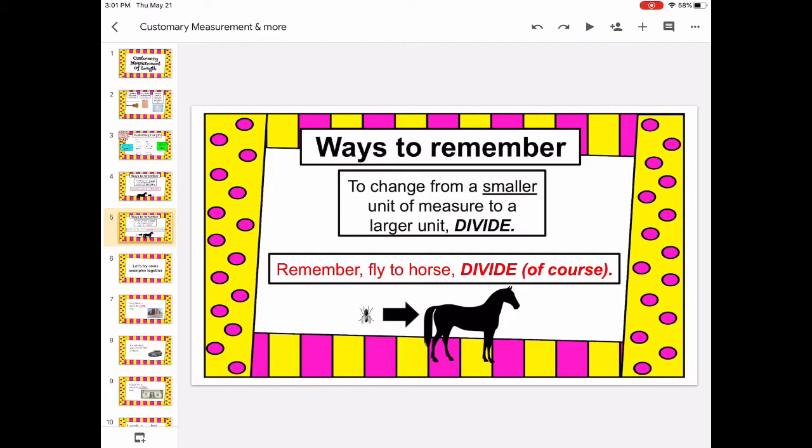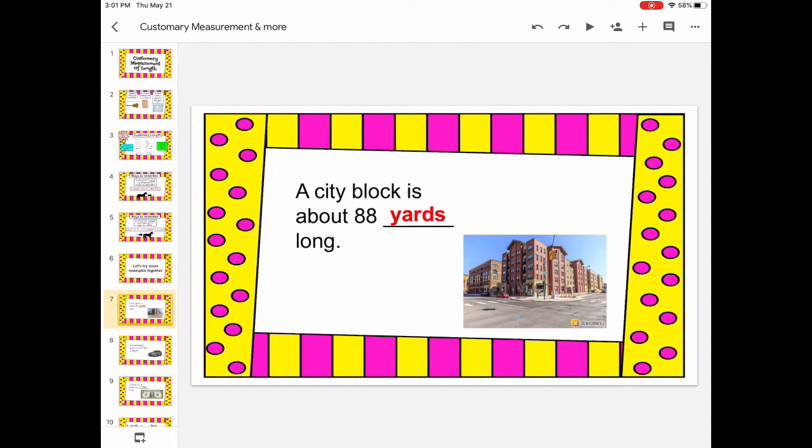So if you were looking at say a city block for example, a city block would be about 88 yards long. It's a very long distance, much bigger than us.